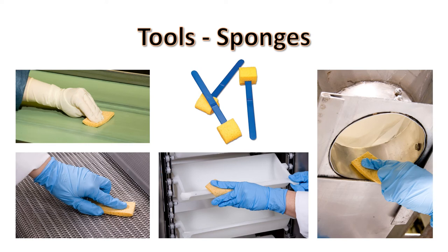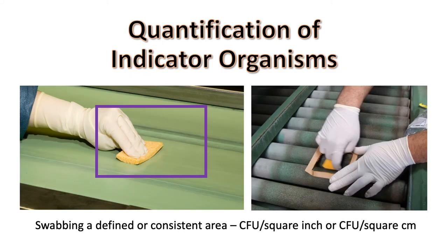One option is to carefully put on clean gloves at each sample location before handling the sponge. The companies that supply these types of sponges, or the laboratories doing the analysis, should provide instructions for proper use. On Zone 1 surfaces, or any surface where you are trying to quantify indicator organisms, you need to make sure that the sample is taken within a defined area — for example, 100 square centimeters or 25 square inches. The number of microorganisms or colony-forming units (CFU) per square centimeter or square inch can then be determined.